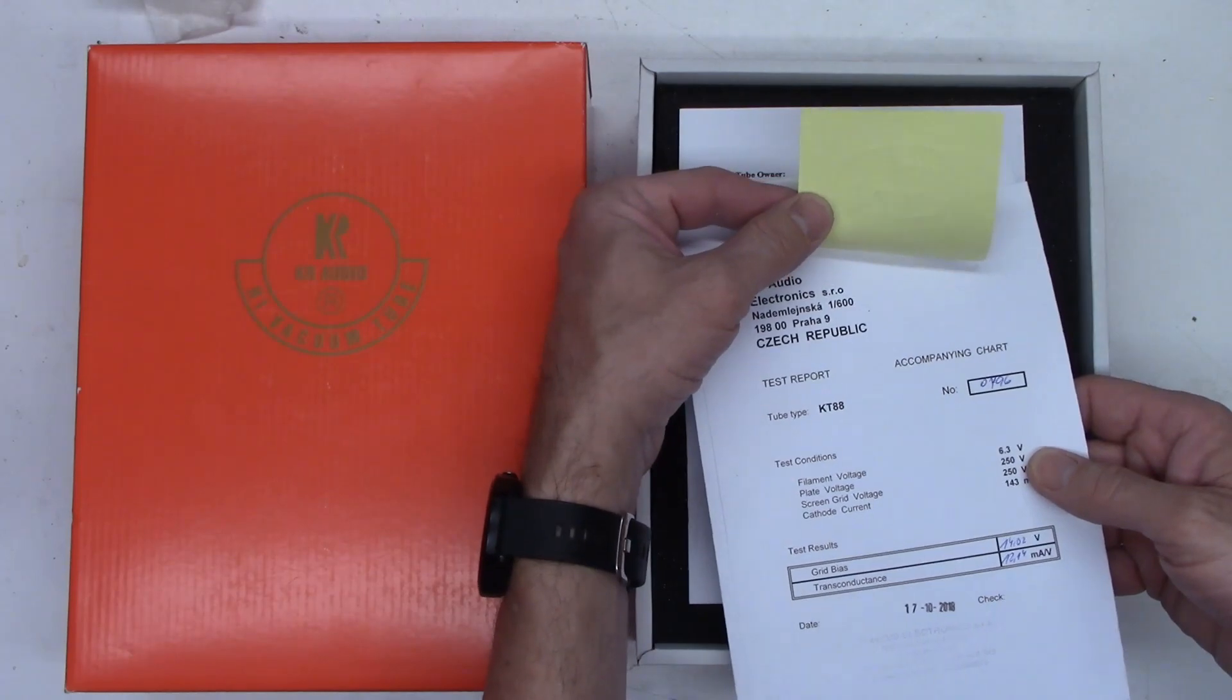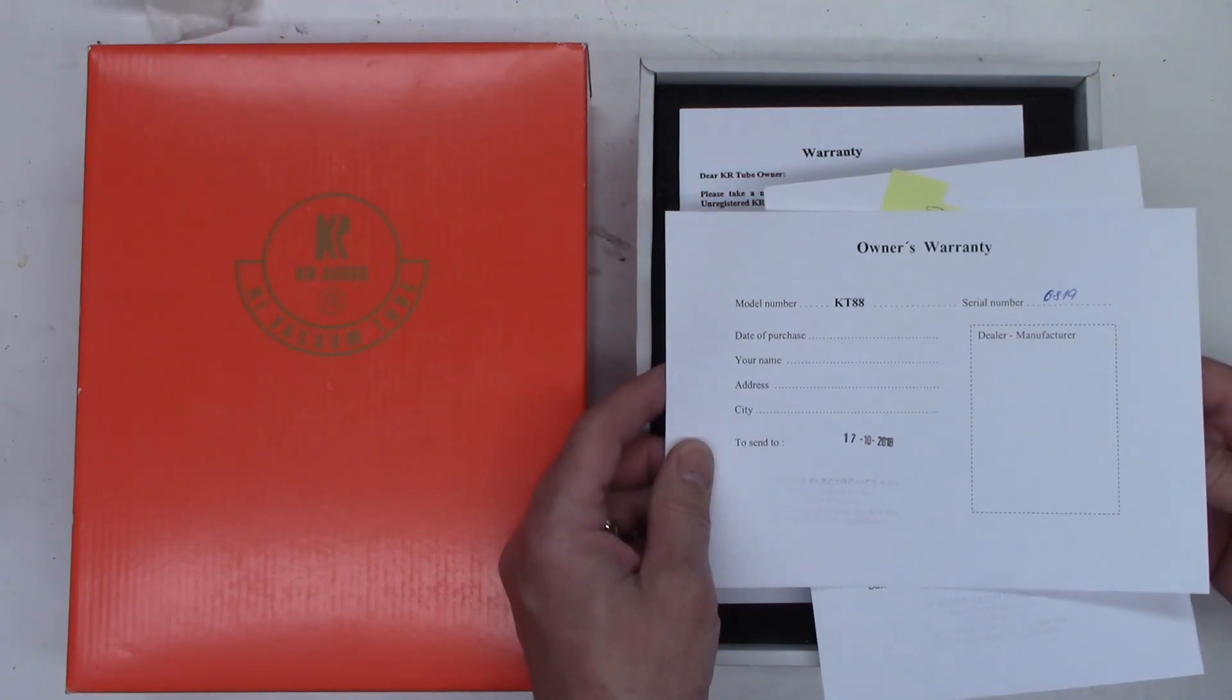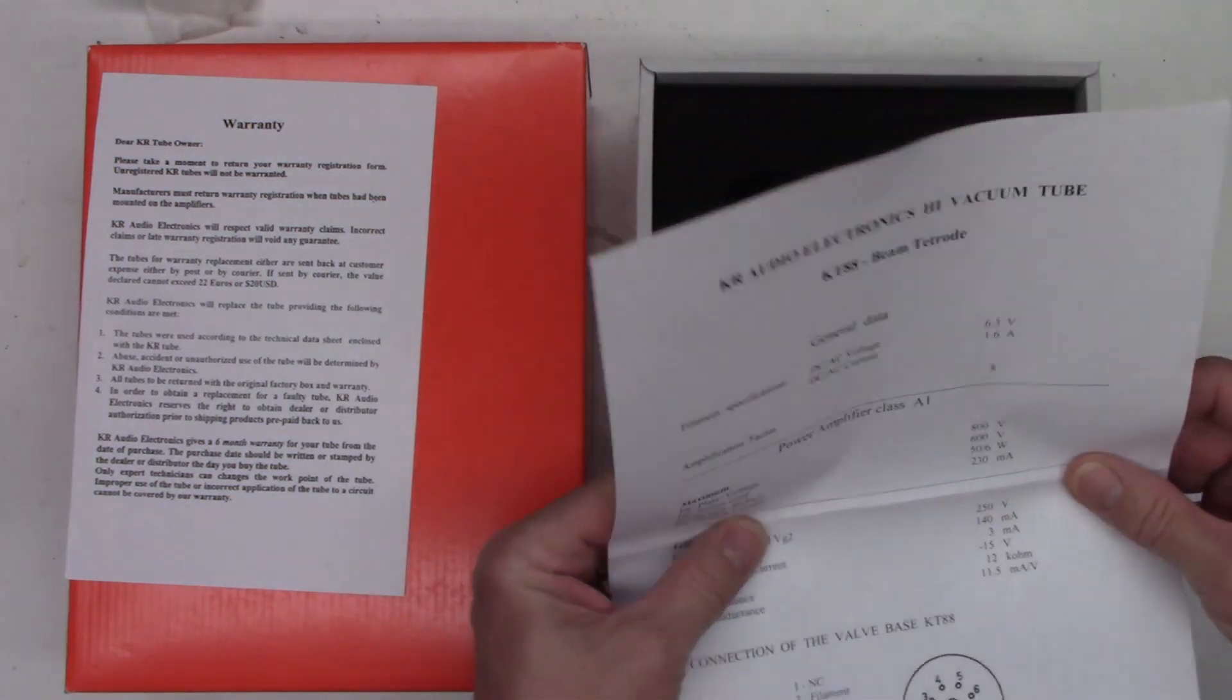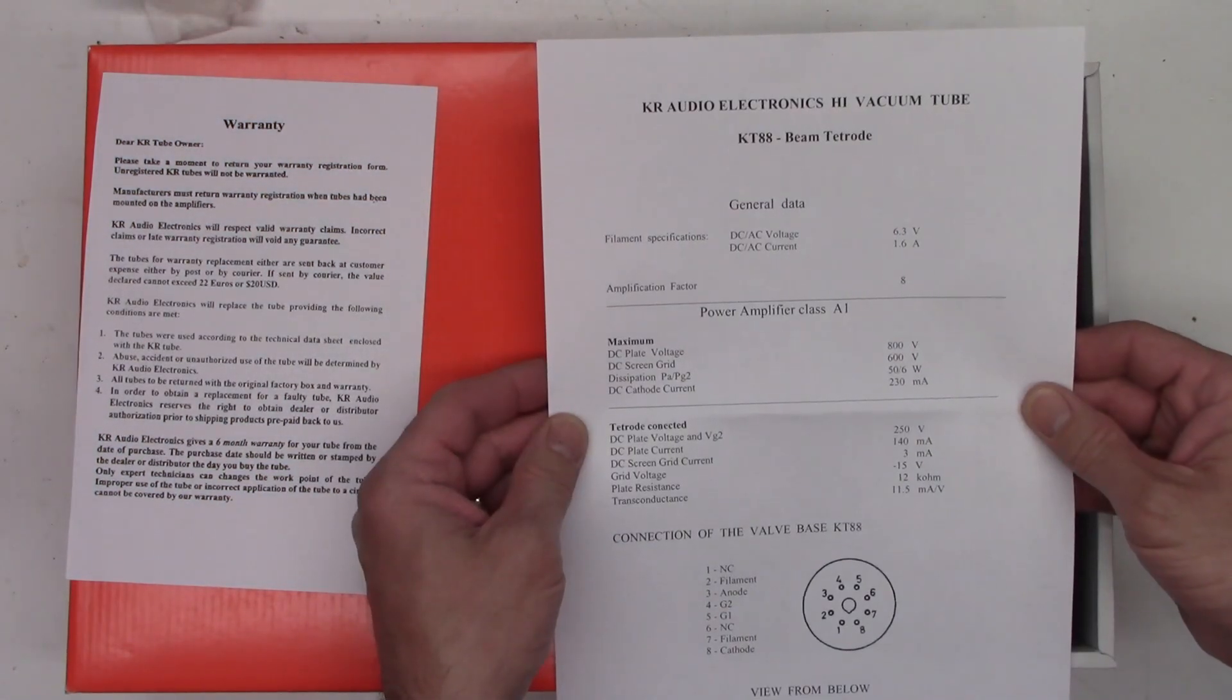Some spec sheets from the Czech Republic. These are KT88 tubes. A warranty sheet, a diagram of the connections, and a complete spec sheet.